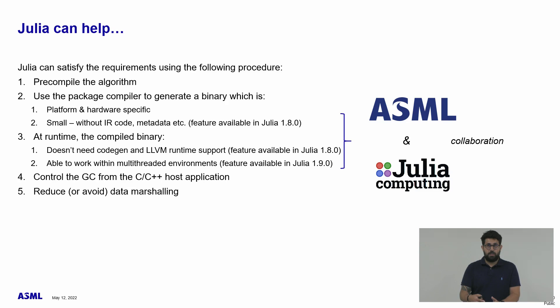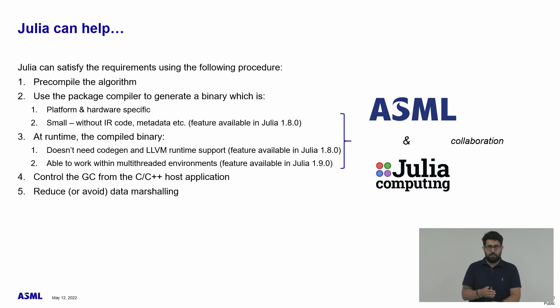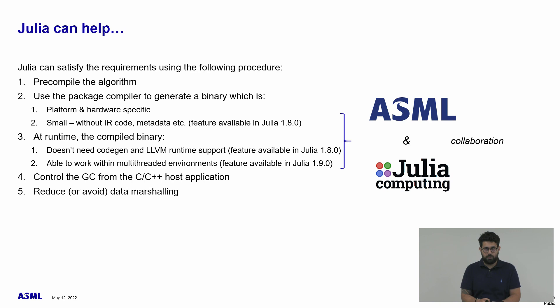Getting back to the approach, we use to compile the real-time code in the following steps. We want to use the PackageCompiler to generate a binary that is platform-specific and small, without intermediate representation code or redundant metadata. At runtime, we want the compiled binary to not rely on the LLVM runtime — which is used for JIT compilation — and we don't want JIT compilation in place. That is a feature enabled in Julia 1.8. We also want the binary to properly work in a multi-threaded environment, which will be available in next versions of Julia, probably Julia 1.9.